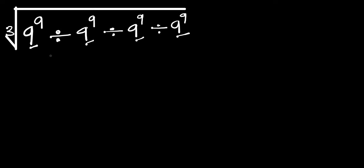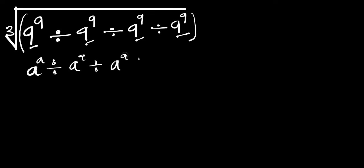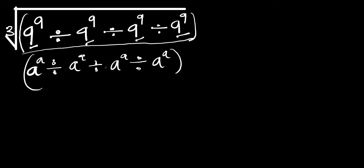What we are going to do is concentrate on what we have inside this cube root first. Now let's consider this analogy. If you have a to the power of a, divided by a to the power of a, divided by a to the power of a, and divided by a to the power of a — this is in the form of what we have inside this cube root. Concentrate on the first two terms: a^a divided by a^a equals 1.